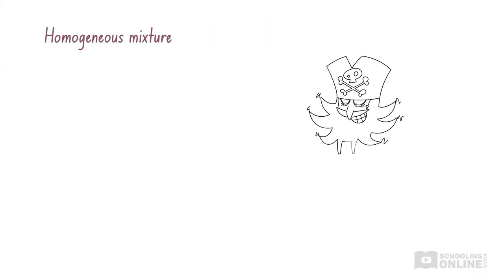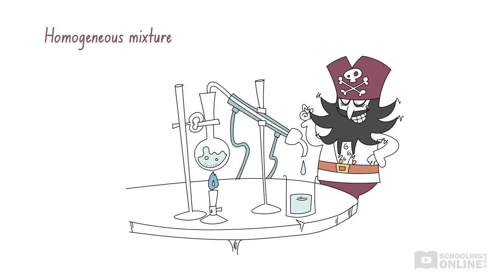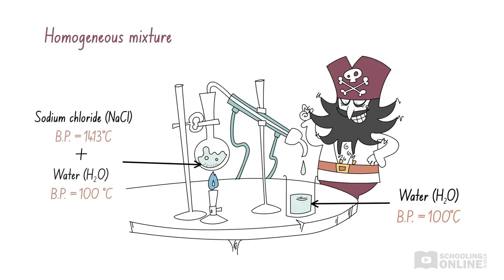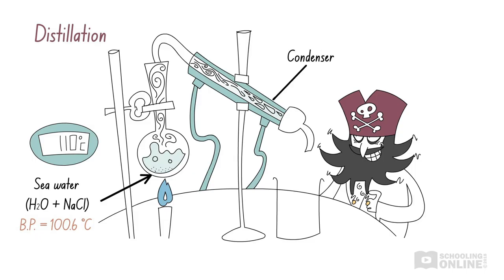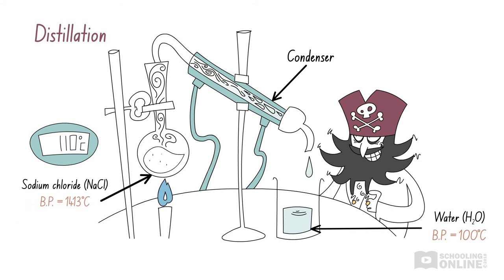Blackbeard used distillation to collect pure water from seawater, which is a homogeneous mixture of salt and water. The boiling point of water is much lower than the boiling point of sodium chloride. Blackbeard heats the seawater to 110 degrees Celsius, which is hot enough for the water molecules to change state from liquid to gas. The water vapour then passes through a condenser, where it cools down and changes back into a liquid. He collects the distilled water by placing a container underneath the condenser, and is left with solid salt crystals in the original container, since it wasn't hot enough for the salt to evaporate.